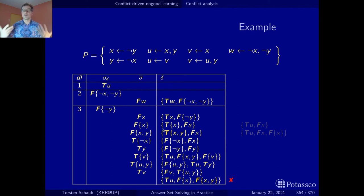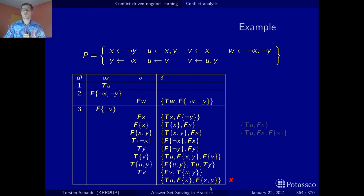By construction, since this literal was unit resulting for this no-good, the complement of this literal must be contained in it. Here is the literal we want to eliminate. We resolve on these two complementary literals by eliminating the literal from the conflict no-good and its complement from the reason no-good, and obtain a new conflict no-good.